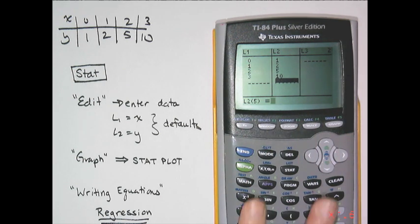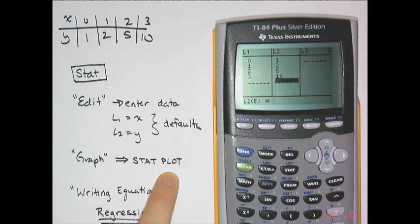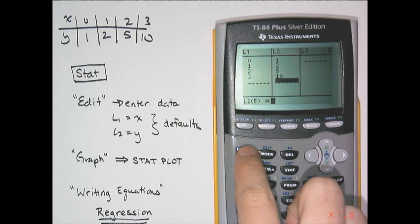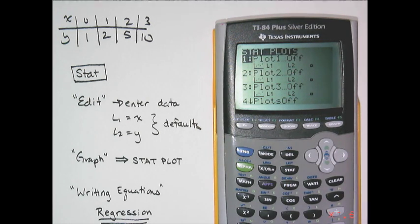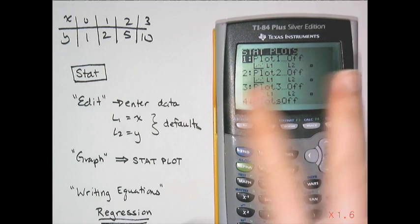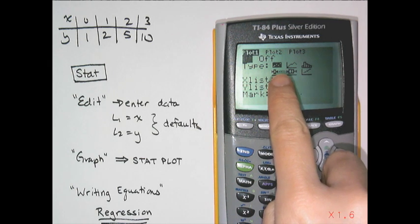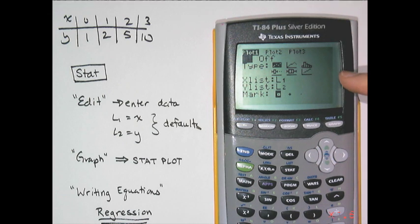One thing your calculator can do with this data is graph it for you. To graph, look for Stat Plot — it's above the Y= button, accessed by pressing Second, then Y=. Some of you have accidentally gone there before. Stat Plot stands for Statistical Plots, and right now they're all turned off. If you want to graph an equation, you usually want these turned off. If you press one and turn it on, this tells the calculator to look at the data stored in STAT to make a graph, not the Y= menu.